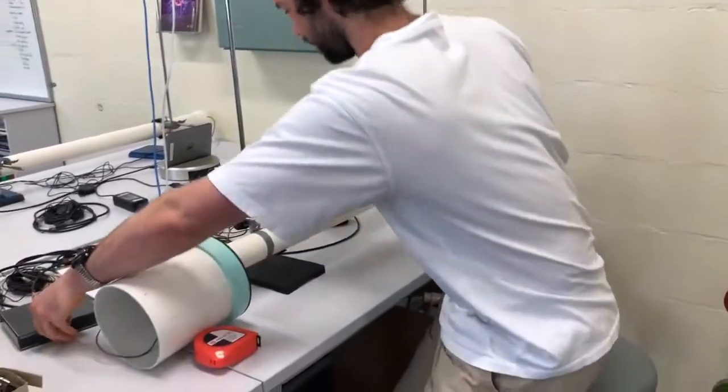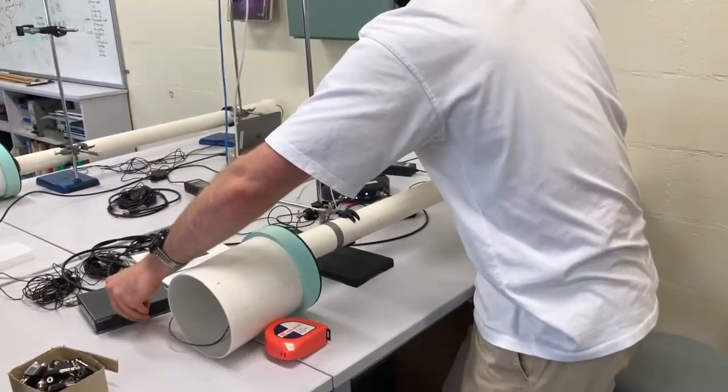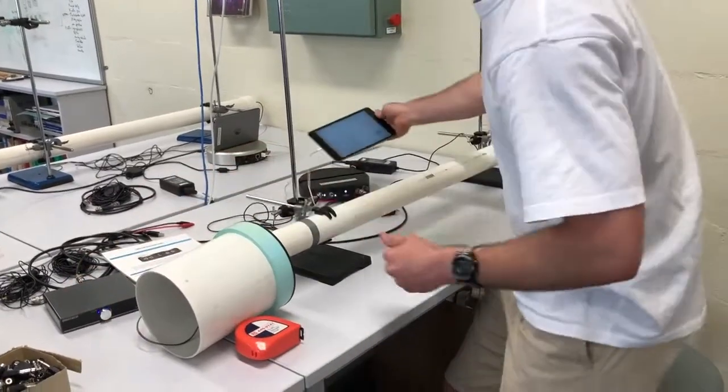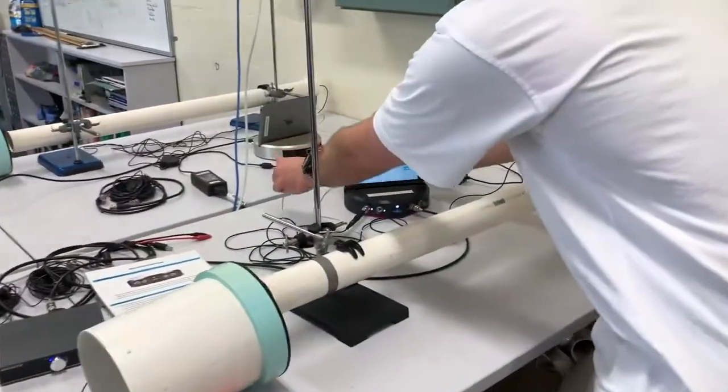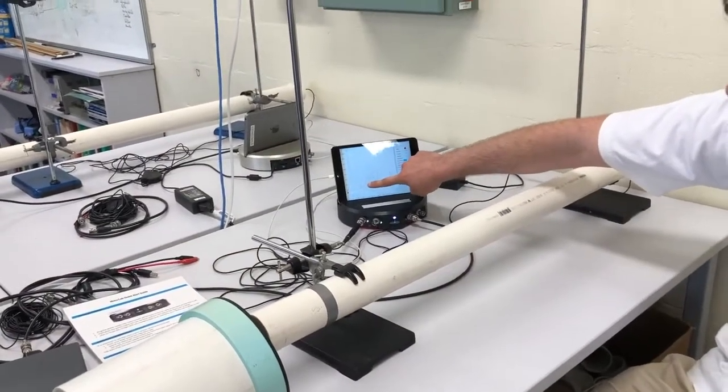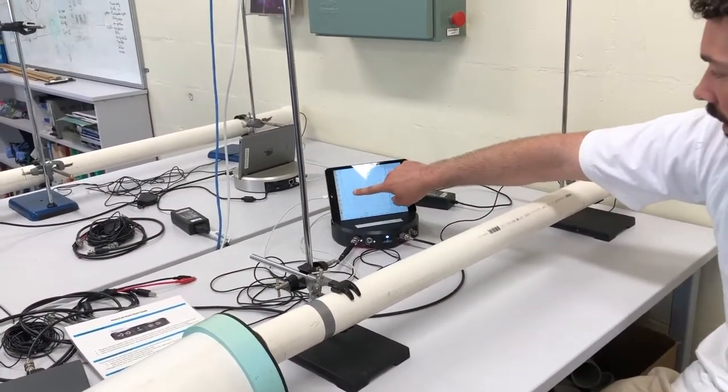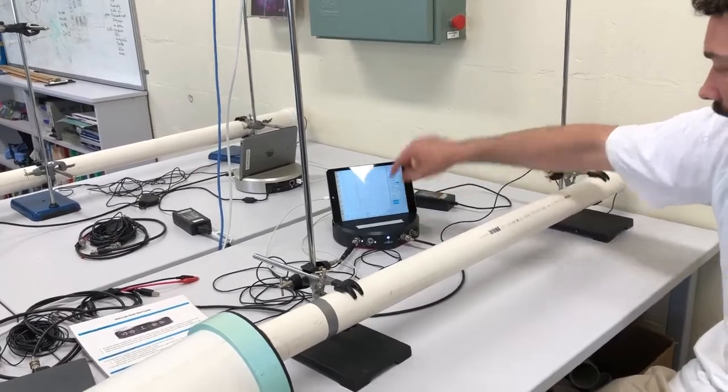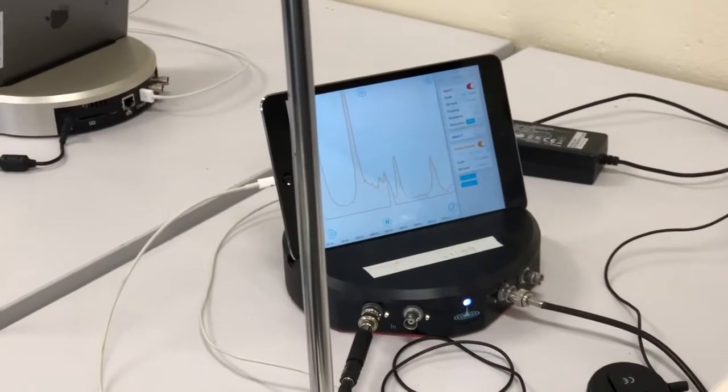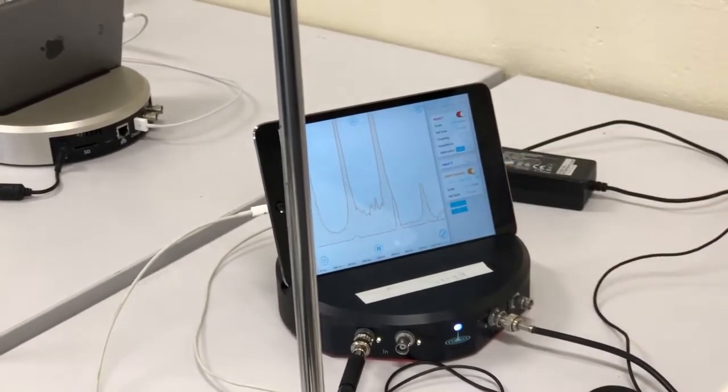Let's just turn this on. So it's sweeping through, it's currently so low you can't hear it, but the Moku can hear it. And so when it comes across a resonance, we'll see that appears here. So there we go, there was a resonance at that frequency. We'll just hit another resonance here.